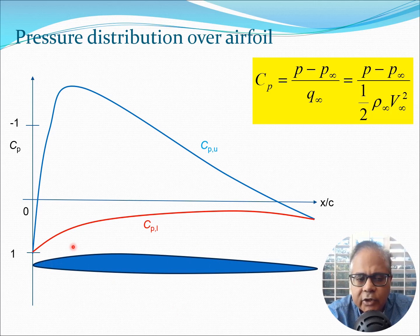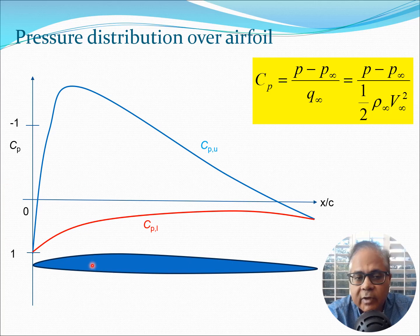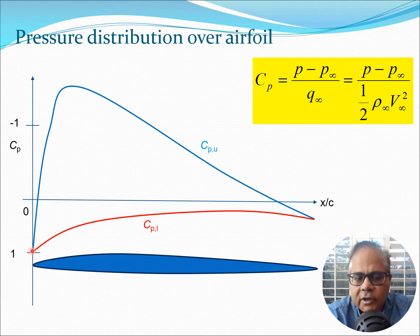Now let's look at the pressure distribution on the airfoil. CP is defined as (p - p_infinity) / q_infinity, where q_infinity is the dynamic pressure (1/2 * rho_infinity * V_infinity^2). Here, infinity refers to the free stream values — rho is density, V is velocity of the free stream air, and p is the pressure on the surface of the airfoil. If we plot the pressure for the lower surface we get a red line, and for the upper surface we get a blue line showing a suction pressure with a negative CP value.